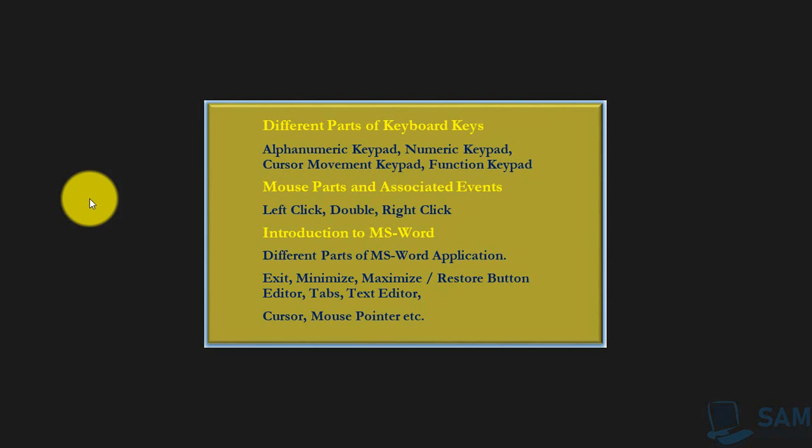Hello everyone, this is Shiraz Ahmad Khan, your host of this video. Today we are starting MS Word for the very first time. But before starting MS Word or any other computer software, we will have to understand the two basic input devices which are almost necessary for our computer systems — the keyboard and the mouse. After discussing these two devices, we'll jump to MS Word and understand its interface.